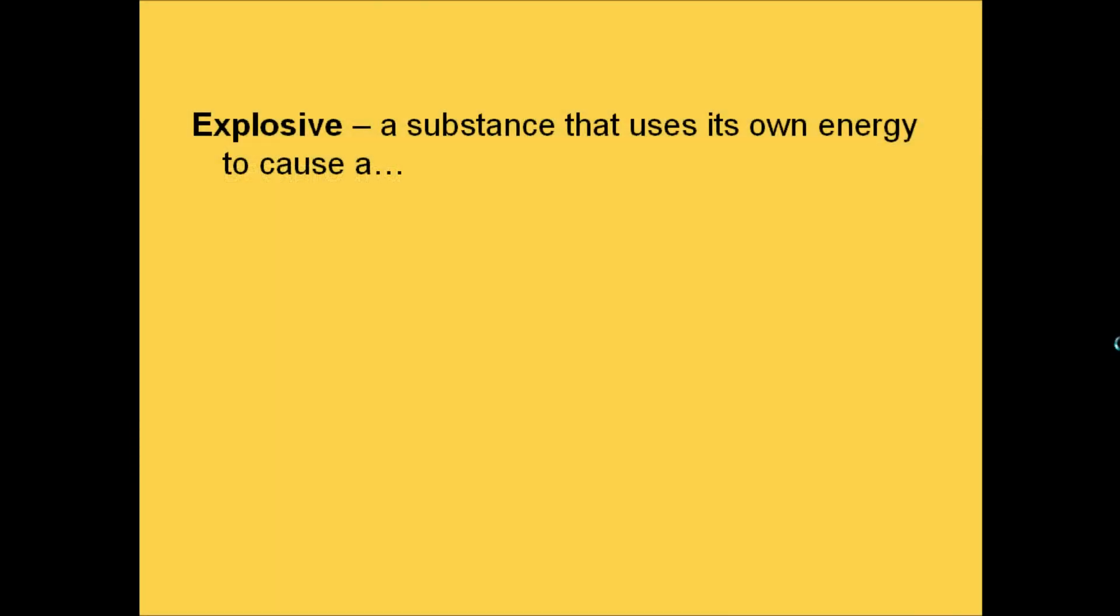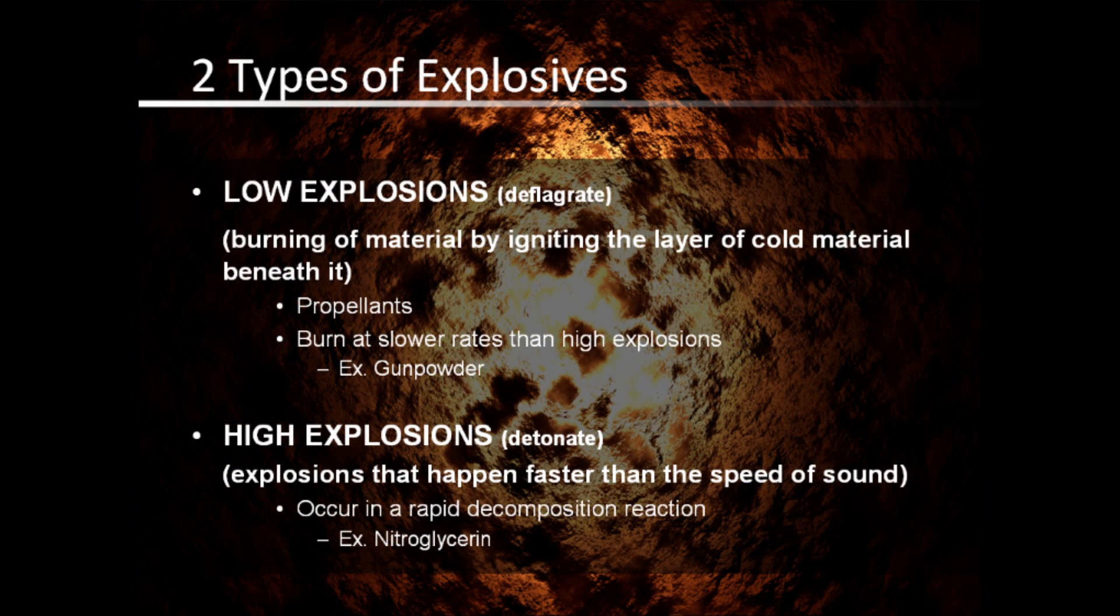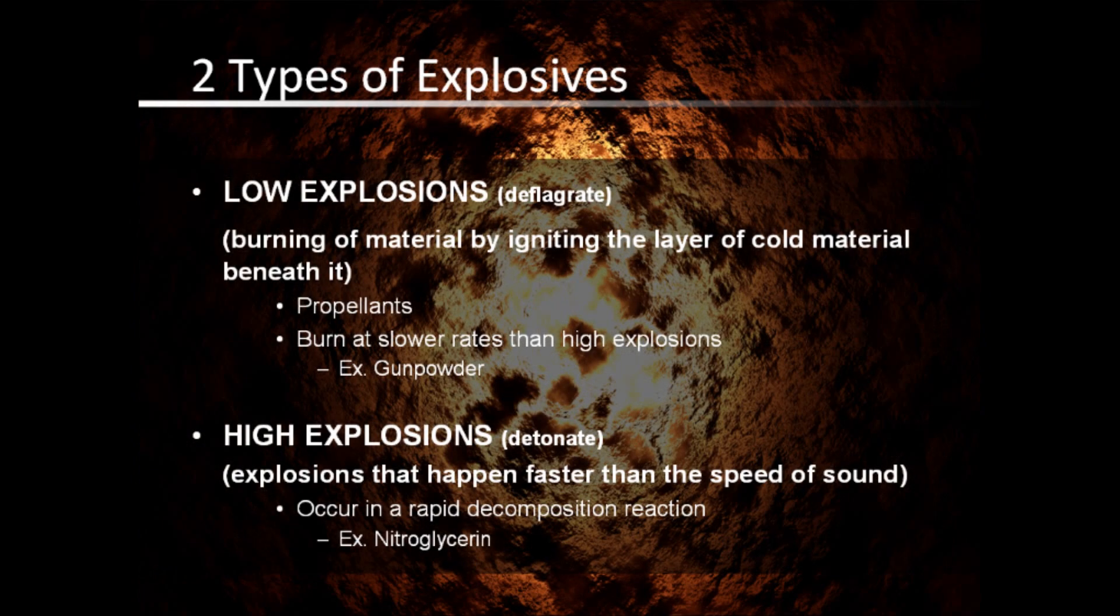An explosive is a substance that can use its own energy to cause an explosion. Explosives can be classified into two types: a low explosion and a high explosion. A low explosion deflagrates, which means the burning of material by igniting the layer of cold material beneath it. An example of low explosive is gunpowder. They are used as propellants, such as in a gun, and also burn at slower rates than high explosions.